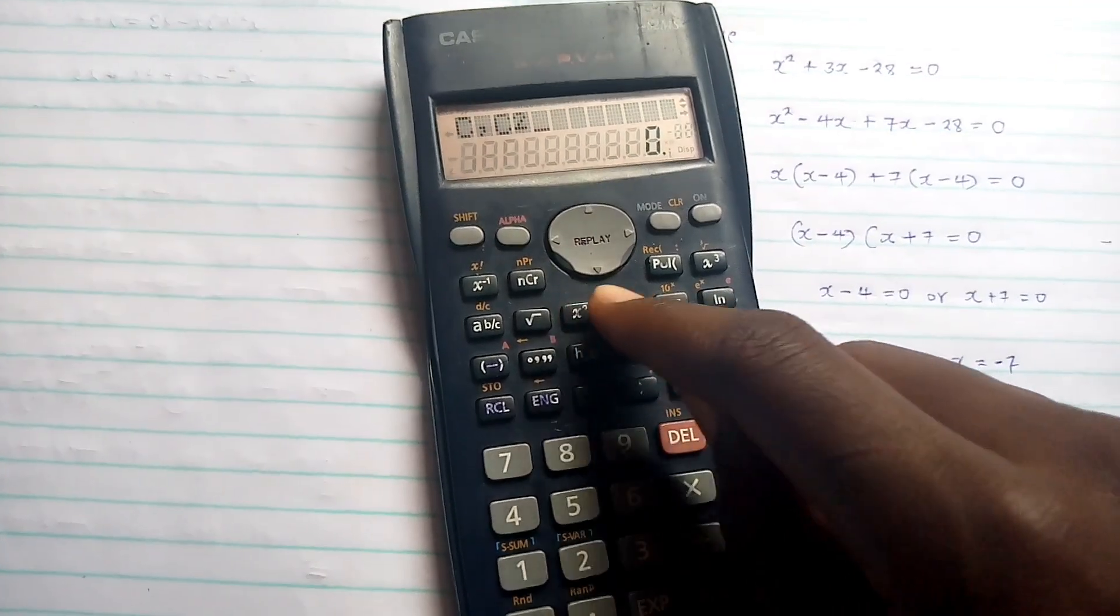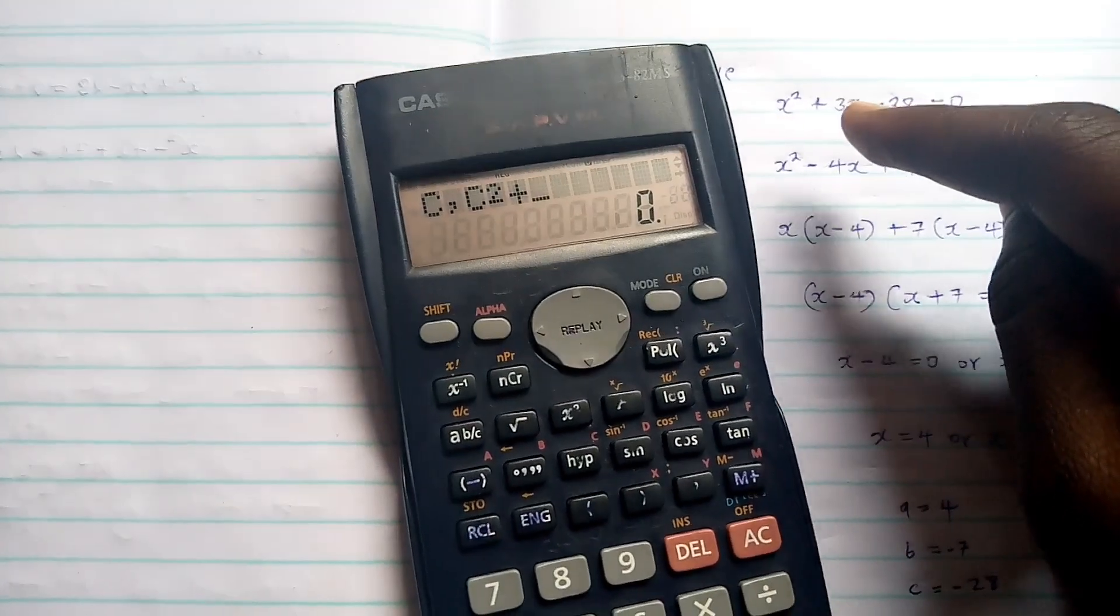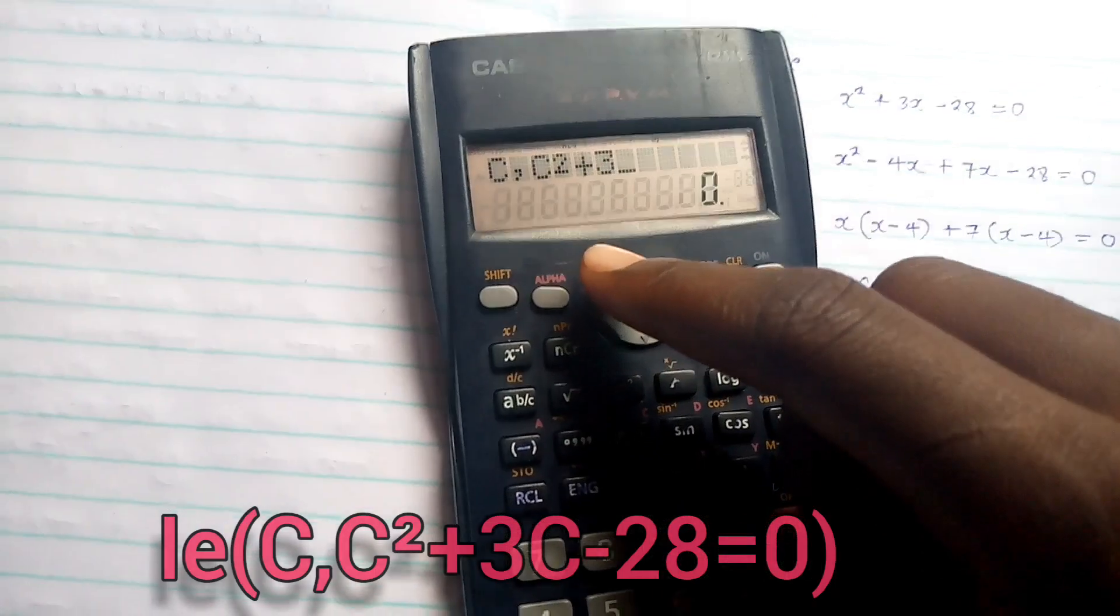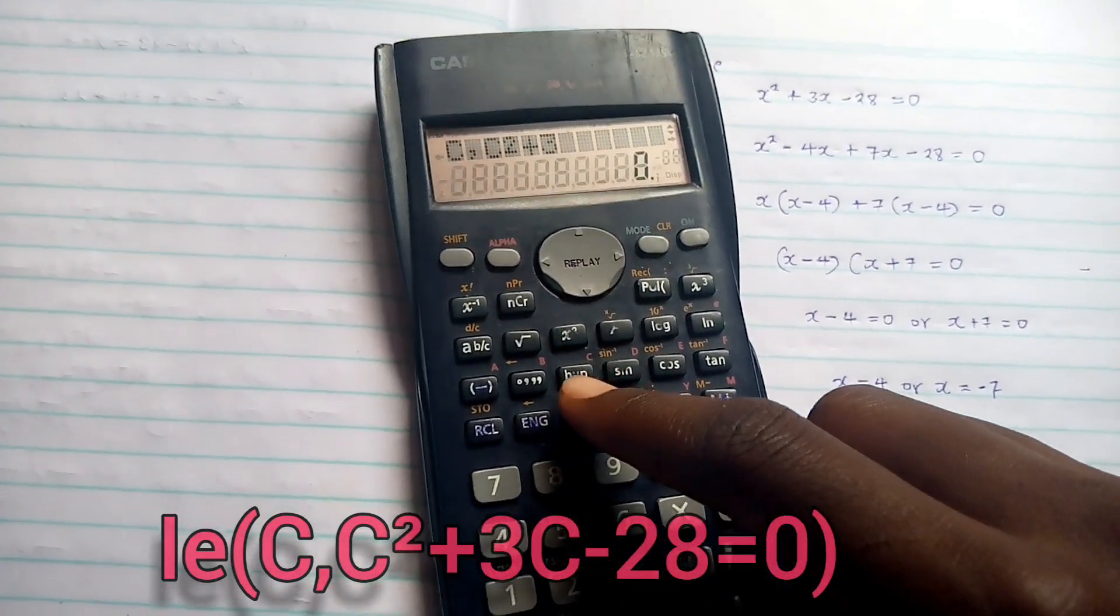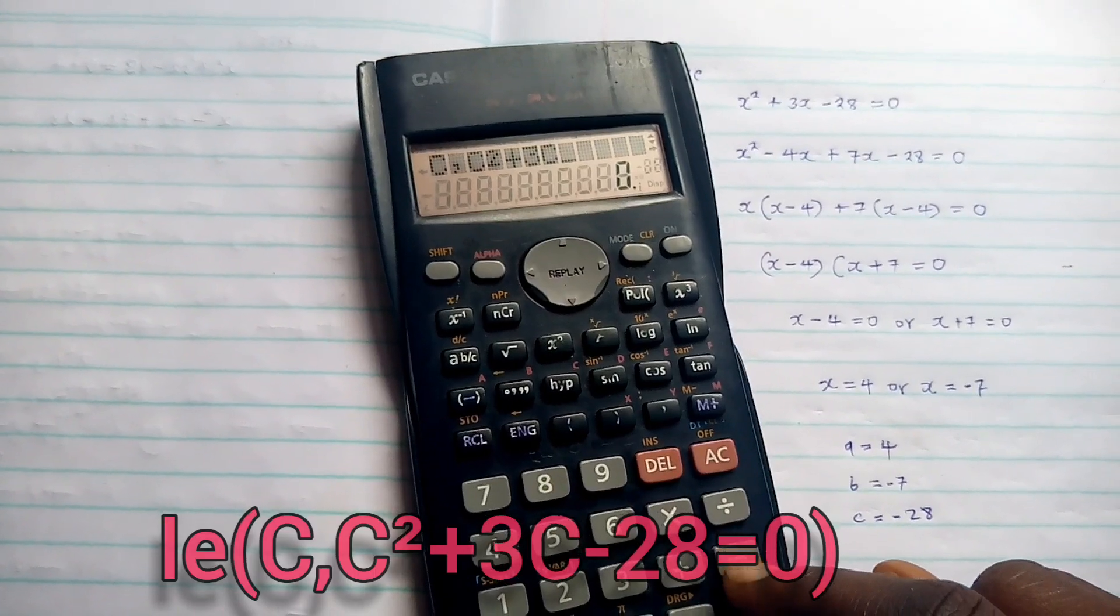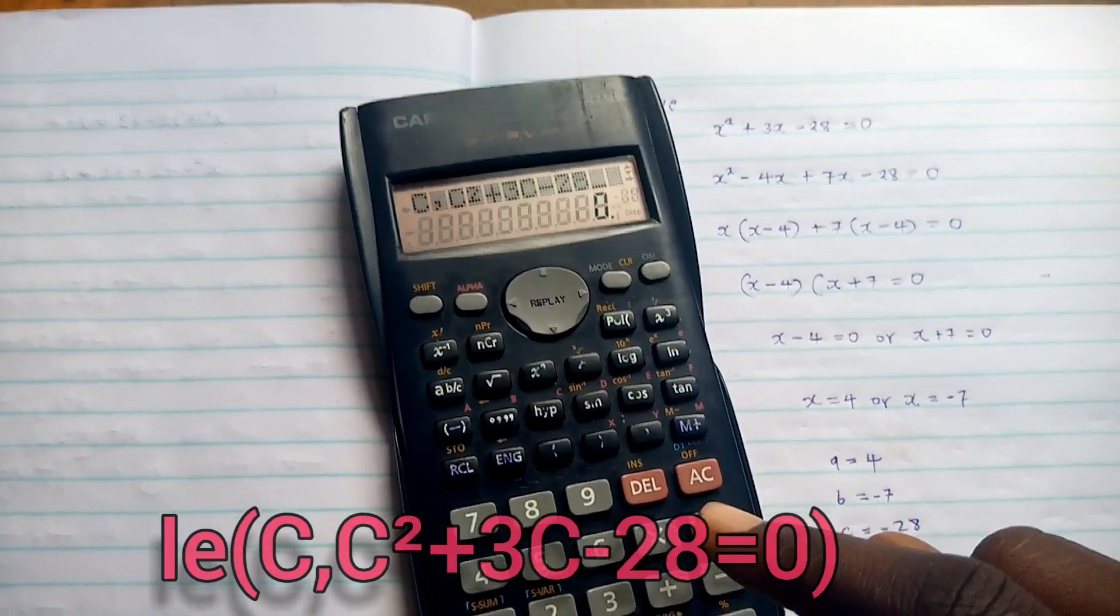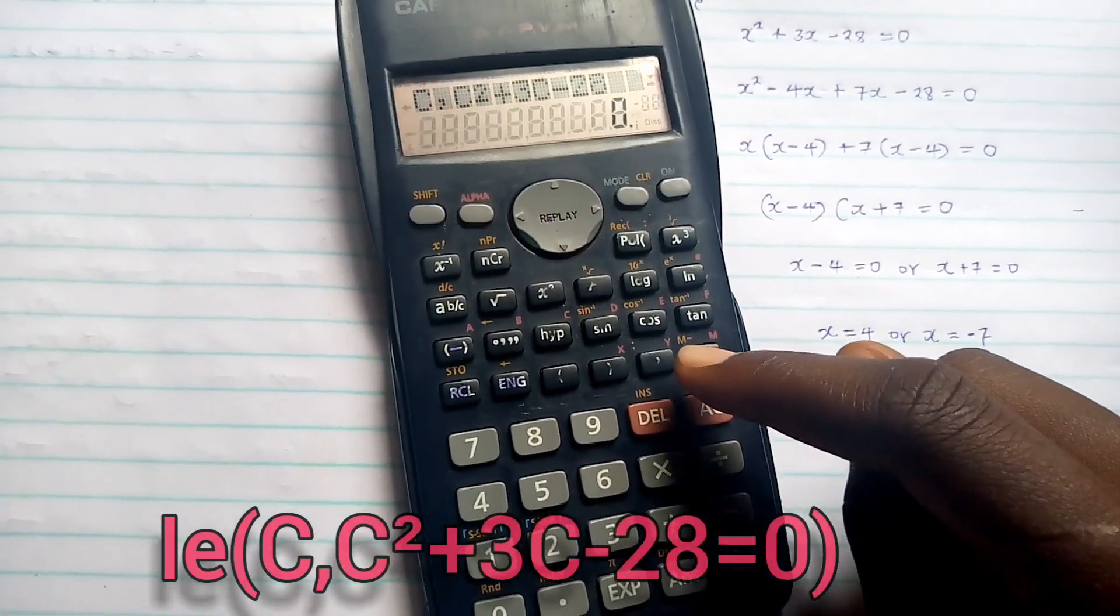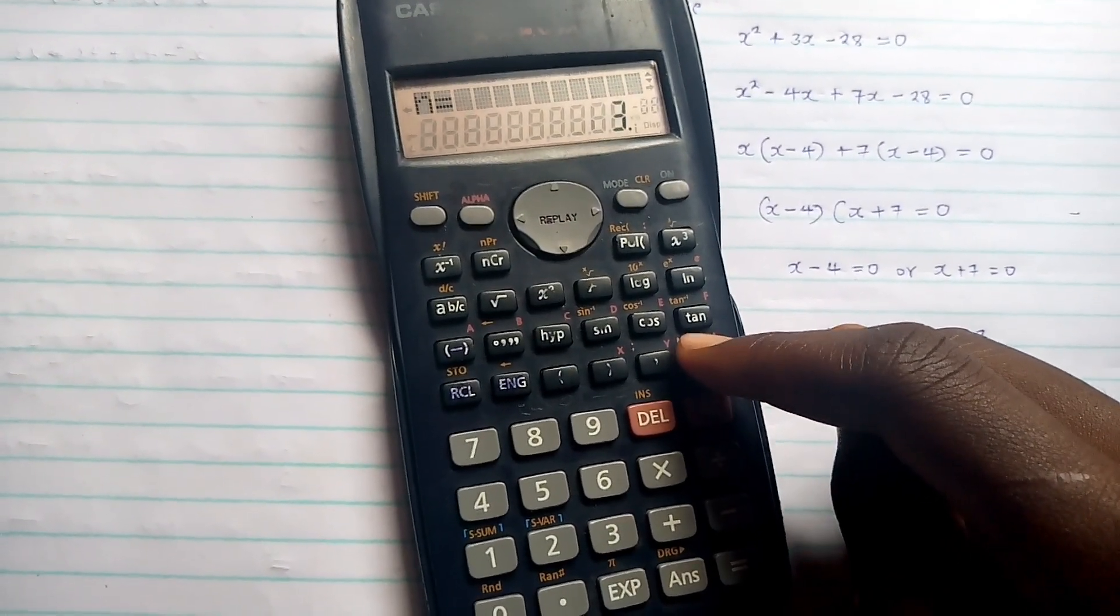Press square, plus 3x. Now press 3, alphabet C, minus 28. We'll type it, minus 28. Then after that, we'll press M plus 4 times. Here you go: 1, 2, 3, 4.